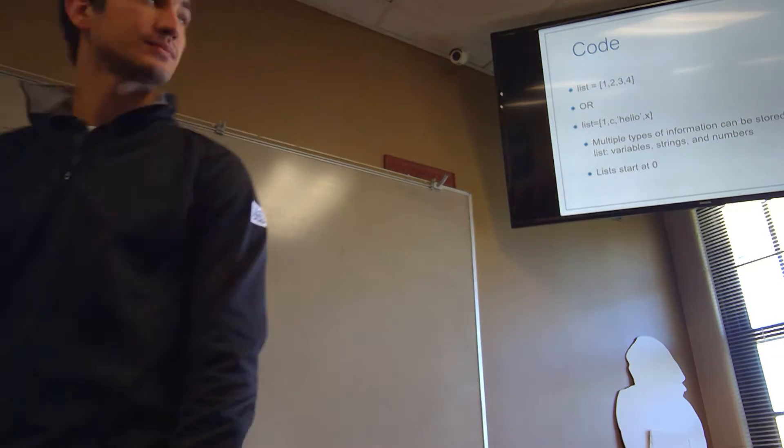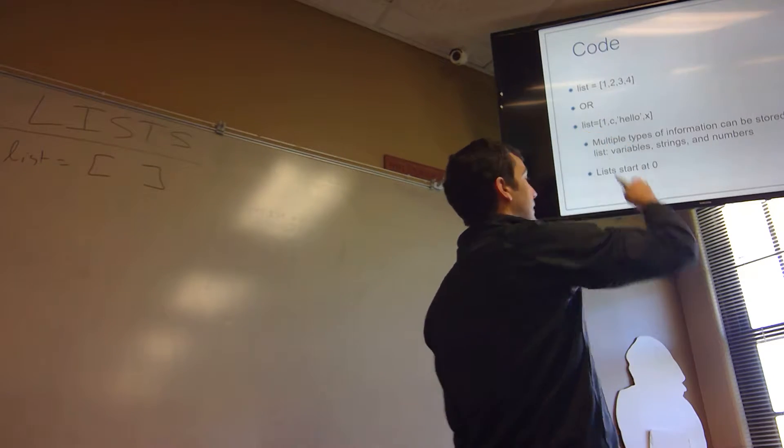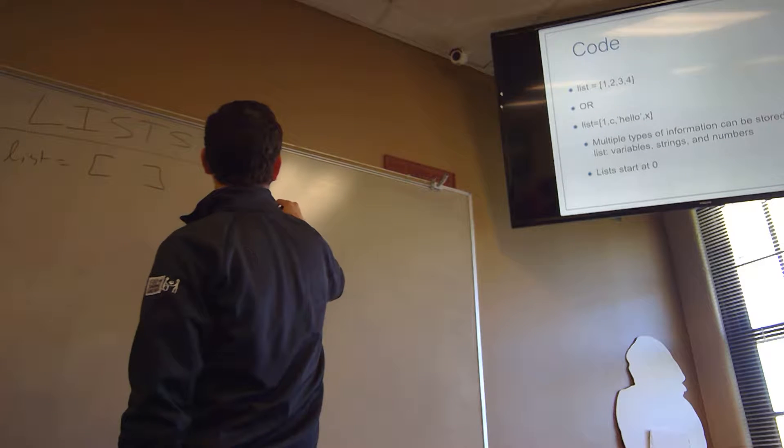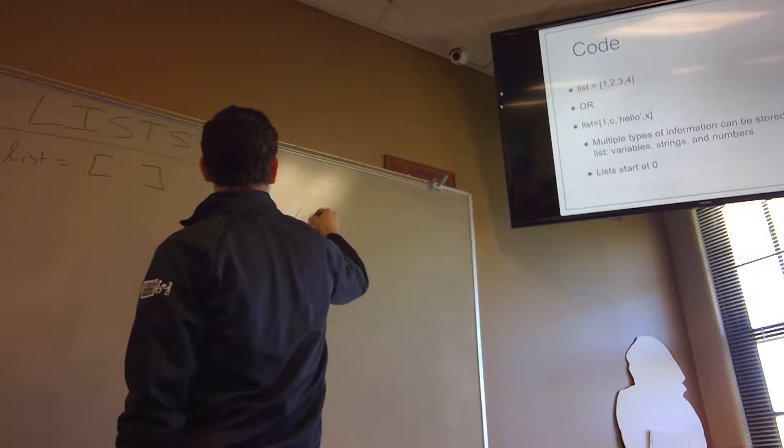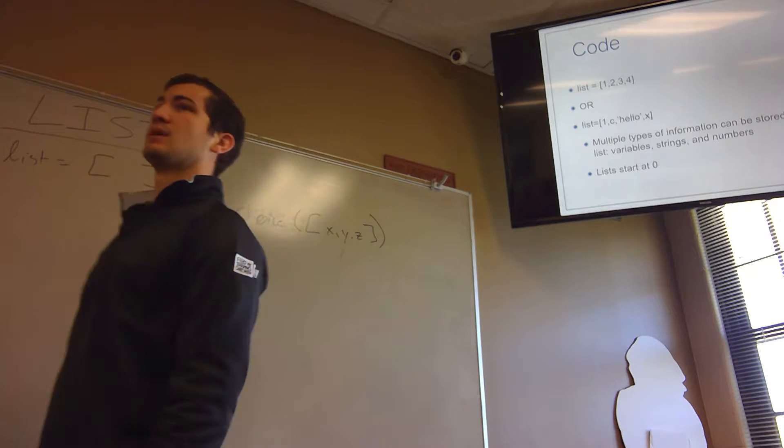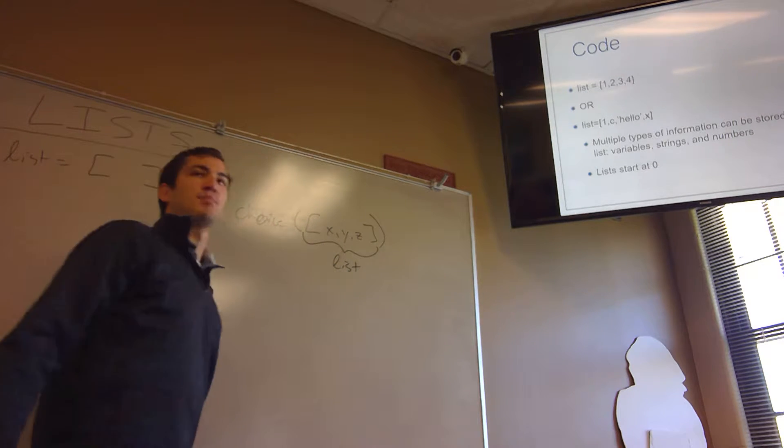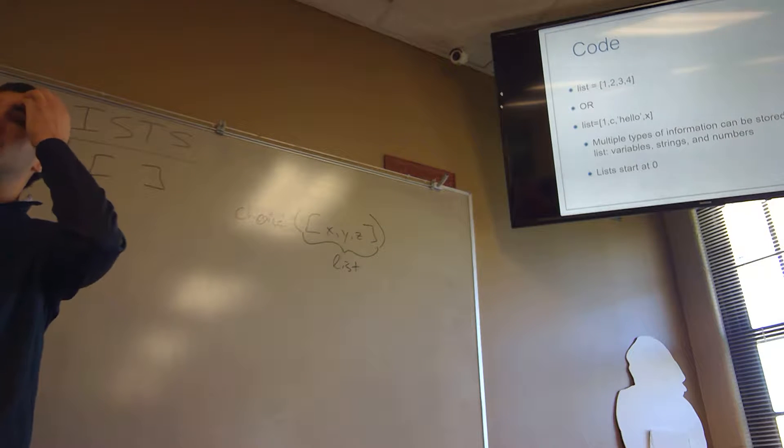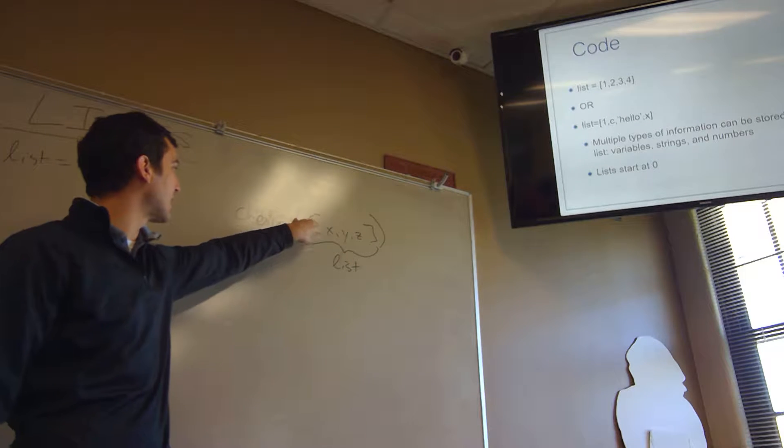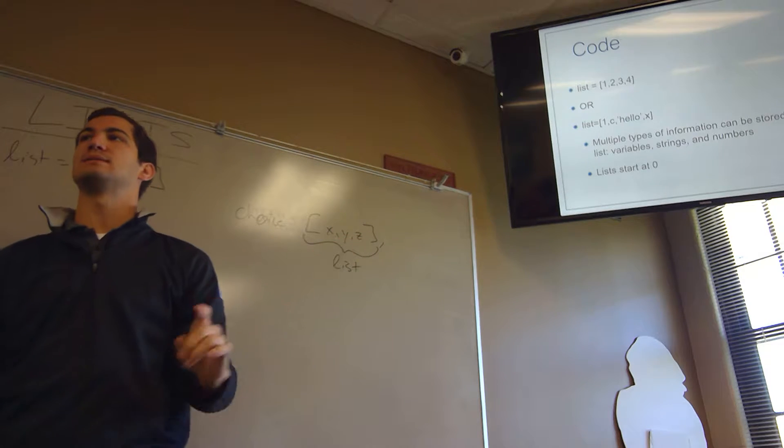Alright, so the code for a list is your variable equals and then your brackets, right? You guys remember with random.choice, we had parentheses, bracket, x, y, z, bracket, parentheses. That's because this is a list. Random.choice will only work with the elements that are inside of a list, which is why if you forgot the parentheses or any combination or you switched the parentheses and the brackets, it didn't work.